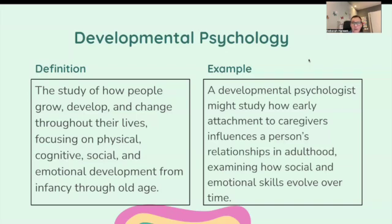We're going to start with developmental psychology — the study of how people grow, develop, and change throughout their lives, focusing on physical, cognitive, social, and emotional development from infancy through old age. An example would be a developmental psychologist who might study how early attachments to caregivers influence a person's relationships in adulthood, examining how social and emotional skills evolve over time.